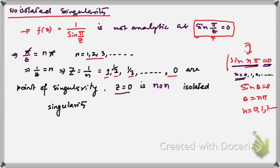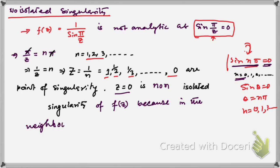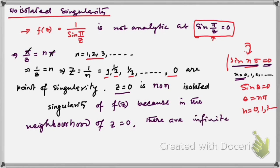This is a non-isolated singularity of the function f(z) because in the neighborhood of z = 0 there are infinitely many other singularities.